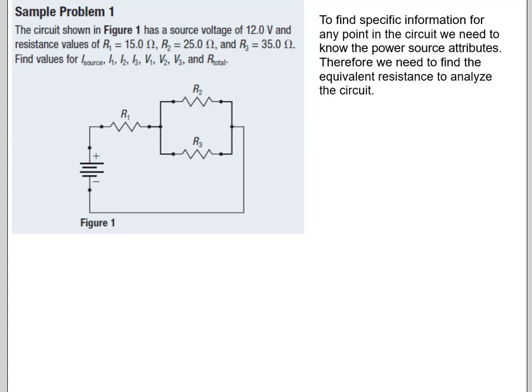The circuit shown in figure one has a source voltage of 12 volts. So I am going to use purple for voltage. So 12 volts. Resistance values. Let's go to green for resistance. So I have 15 ohms here at R1, 25 ohms at R2, 35 ohms at R3. Okay, and I am asked to find the source, the current through all of those resistors, and the voltages at those resistors as well as the total resistance.